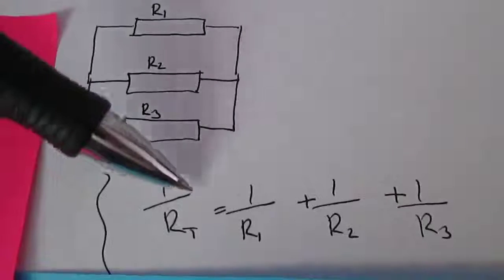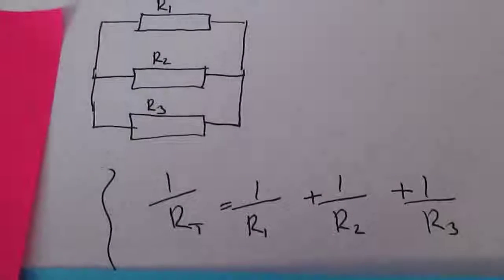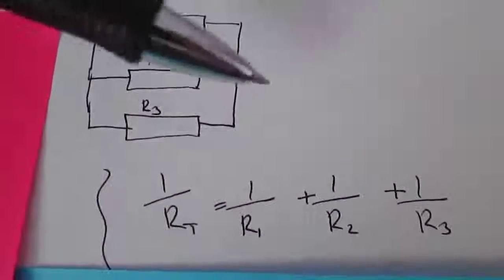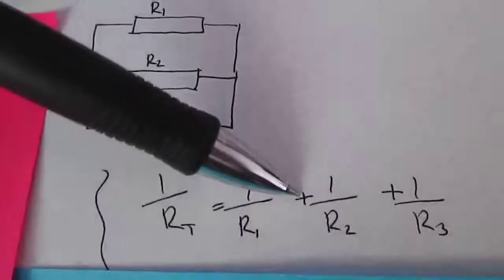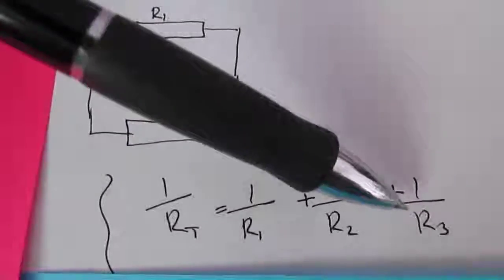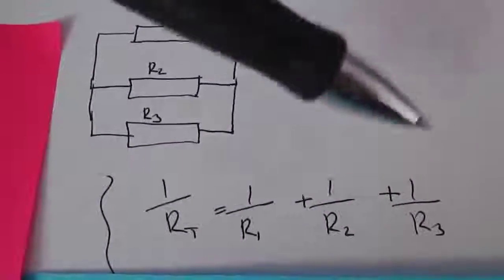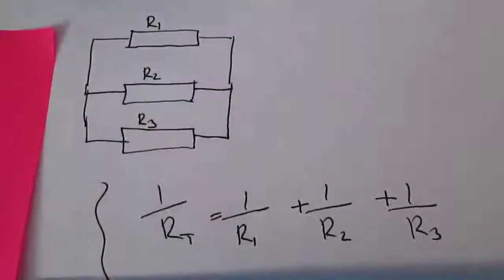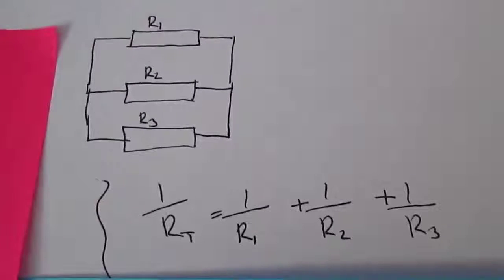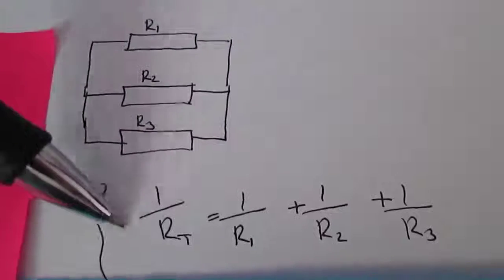We're just going to use the same formula that we used previously for two resistors in parallel. We're just going to add on, so it was one over R1 plus one over R2. Now we've got three, we're just going to add on plus one over R3. If there was four, you'd then continue it on plus one over R4. So that is the formula that you use, you don't use the other product one we talked about previously, you use this one.